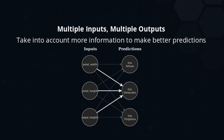Just as before, the weights connect each input with each output, and we need to calculate the weighted sum of inputs. Except this time we will need to perform three independent weighted sums to make three separate predictions. The first output will take the weighted sum of all the inputs, the second output will take a weighted sum of all the inputs but with different weights, and the same thing applies to the third one.